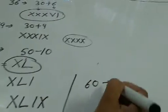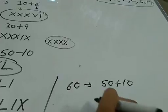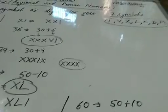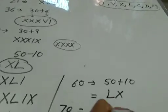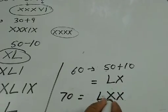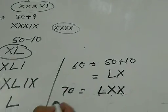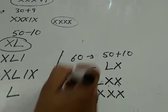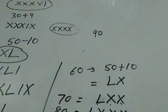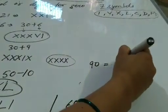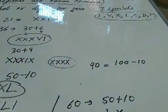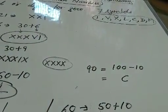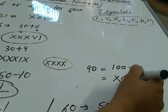50 के लिए अलग symbol है: L. 60 means 50 plus 10 — L plus X = LX. 70 means L, X, X — that is 50 plus 10 plus 10 = LXX. 80 means L, X, X, X — that is 50 plus 30 = LXXX. Now 90: 90 means 100 minus 10. 100 के लिए symbol है C, and 10 minus करना है तो X को left में लाओगे — so 90 is XC.